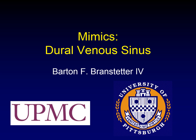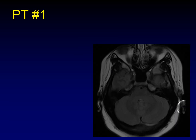For our series on MIMICS, let's look at a couple of patients who both have disease in their dural venous sinuses. This is patient number one. This is just a FLAIR sequence, but there's something wrong back here — there's abnormal increased signal right along the transverse sinus.